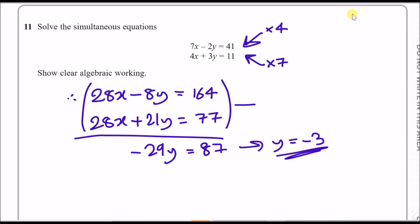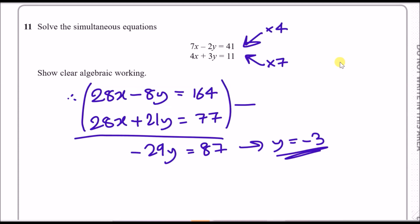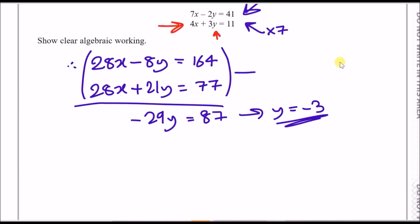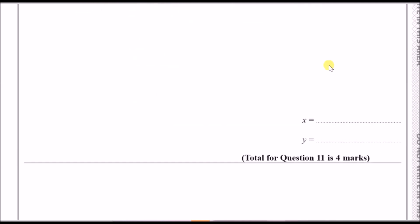Now substitute y = −3 into the easier equation — the second one: 4x + 3(−3) = 11, so 4x − 9 = 11. Add 9 across: 4x = 20, then divide by 4: x = 5. So the solutions are x = 5 and y = −3.